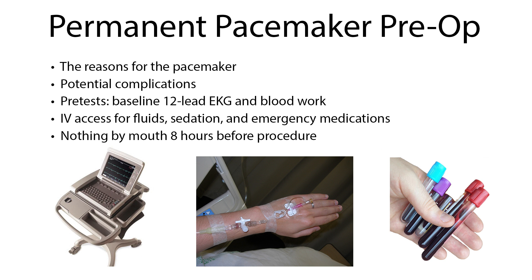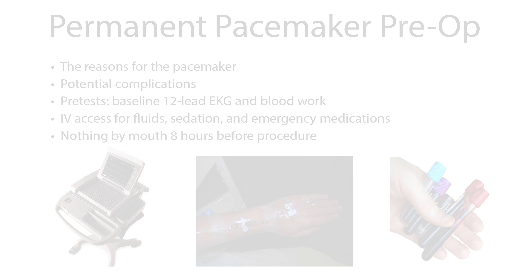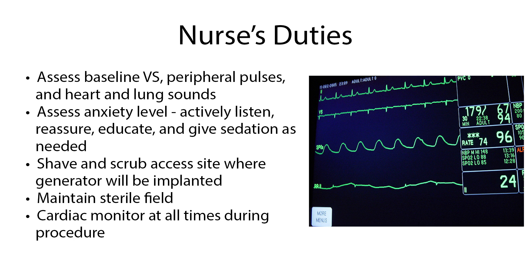When caring for a patient with a permanent pacemaker, teach the patient before surgery about the reasons for the pacemaker, potential complications, pre-tests including a baseline 12-lead EKG and bleeding function blood work, the need for IV access for fluids, sedation, and emergency medications, and that they are to have nothing by mouth for 8 hours before the procedure. The nurse will then assess baseline vital signs, peripheral pulses, and heart and lung sounds. Assess the patient's anxiety level — actively listen, reassure, educate, and give sedation as needed. Shave and scrub the access site where the generator will be implanted. Maintain a sterile field and keep a cardiac monitor on at all times during the procedure.